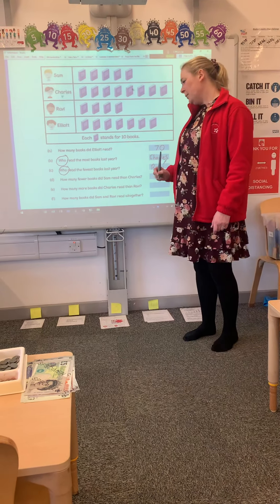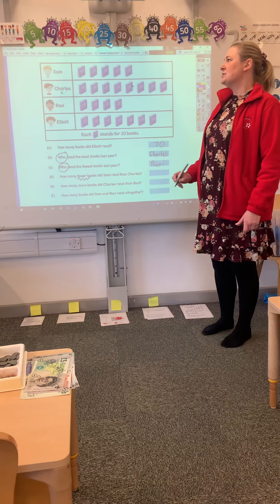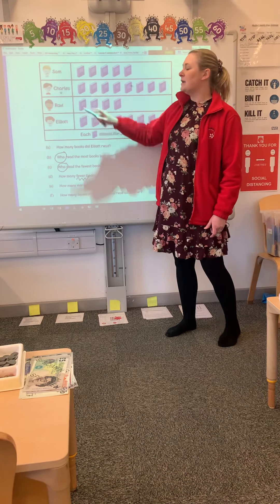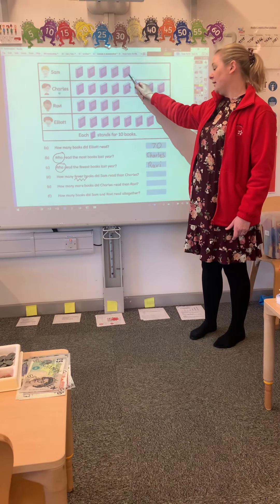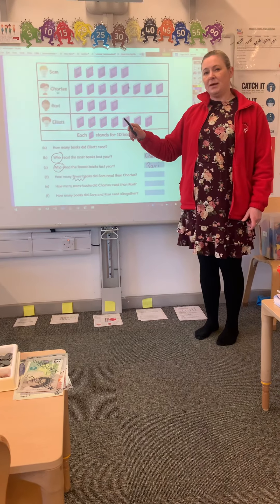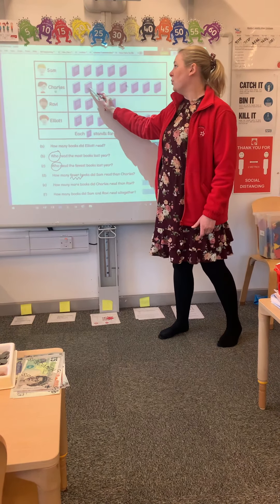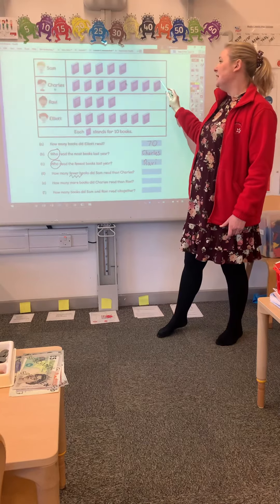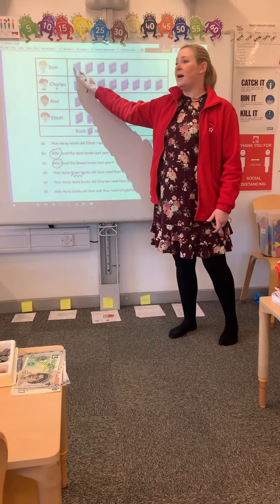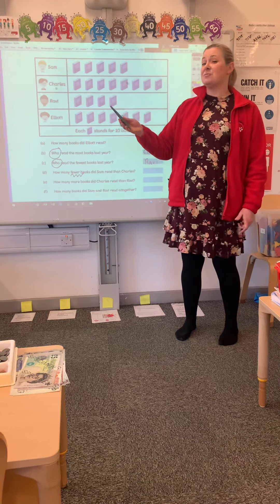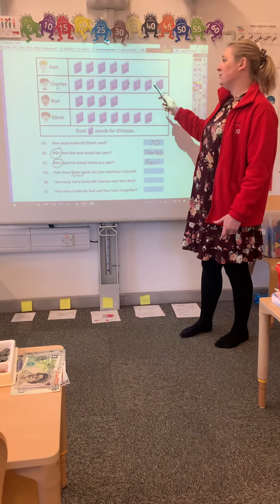How many fewer books did Sam read than Charles? I'm looking at Sam and Charles and making a comparison. You can clearly see that Charles did read more, so Sam has read fewer — but it's asking you how many. One way: Charles read 1, 2, 3, 4, 5, 6, 7, 8 — that's 80 books. So I could do 8 subtract 5 is 3, meaning 80 subtract 50 is 30. So Sam read 30 fewer books.